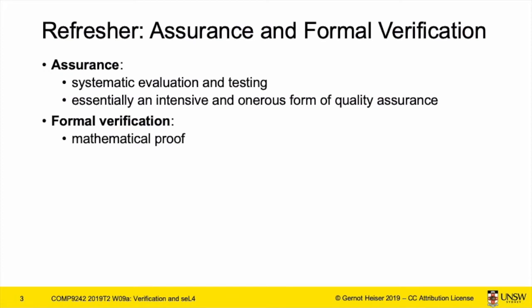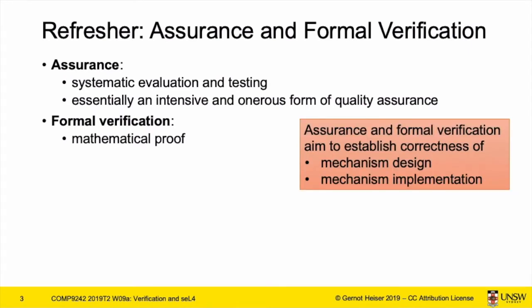This is what I had up before in week six: we have assurance, which is basically glorified ISO 9000, code inspection, and that sort of stuff — a systematic evaluation and testing. Then there's formal methods, which is all about mathematical proof techniques. The above is more traditional software engineering, and below is the more solid stuff. The aim of both is the same: they try to establish that the system is dependable — it does what it's supposed to do and not what it's not supposed to do.